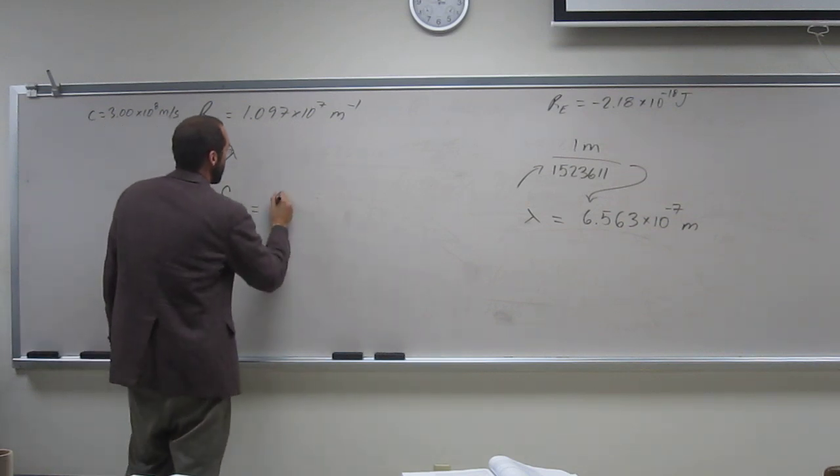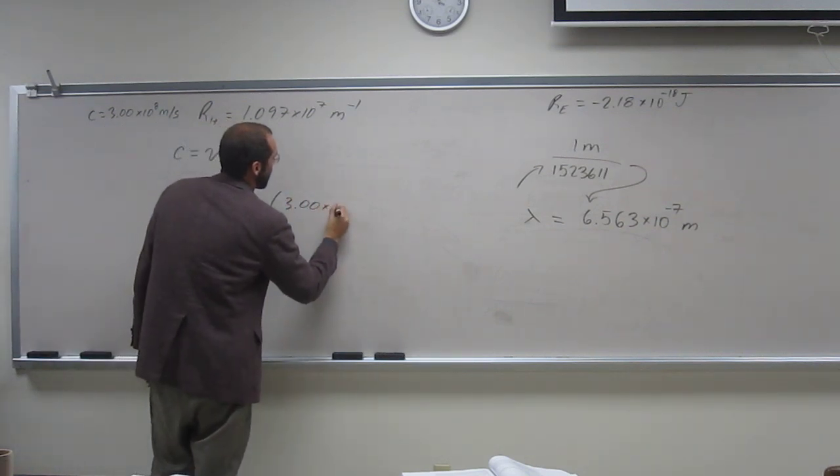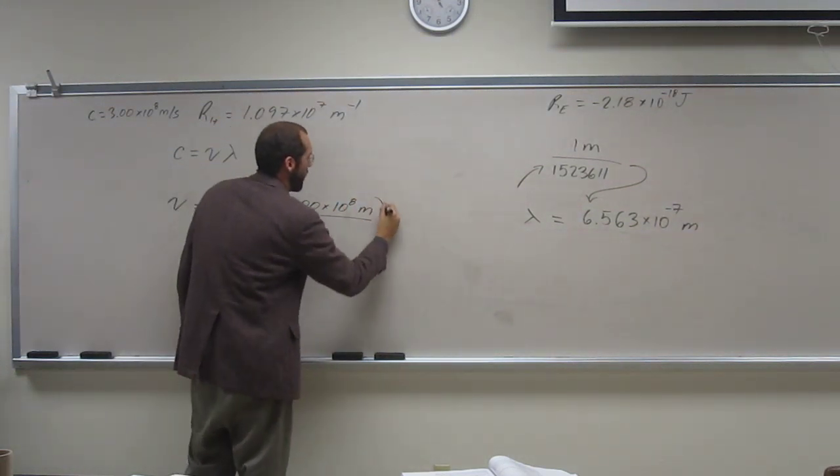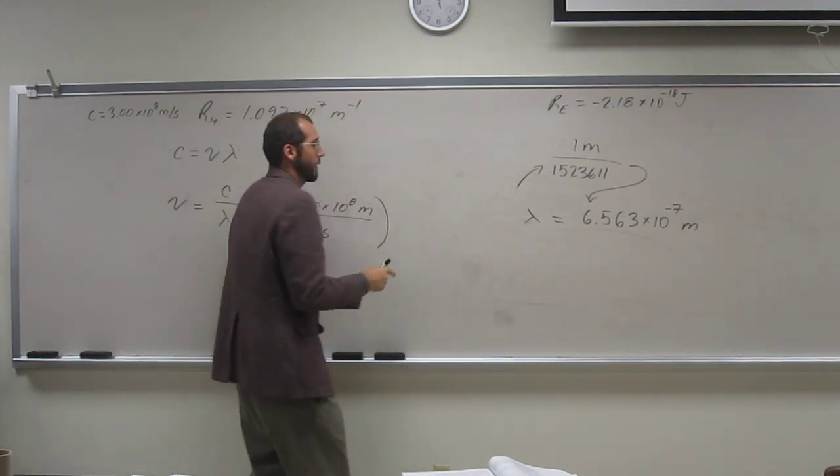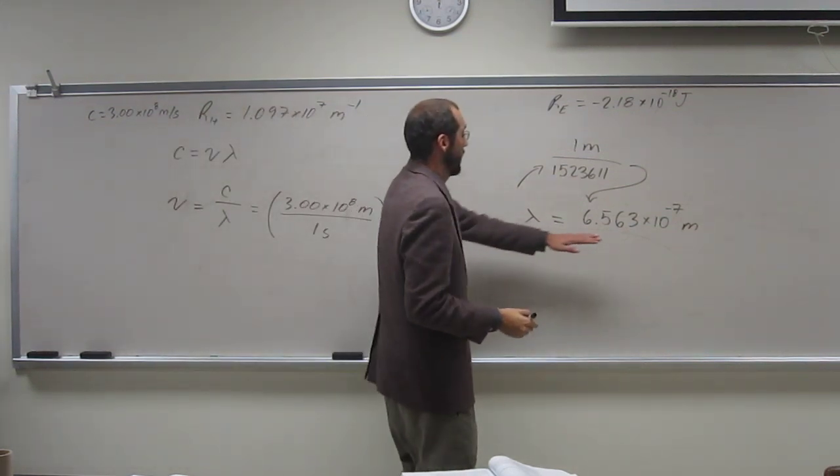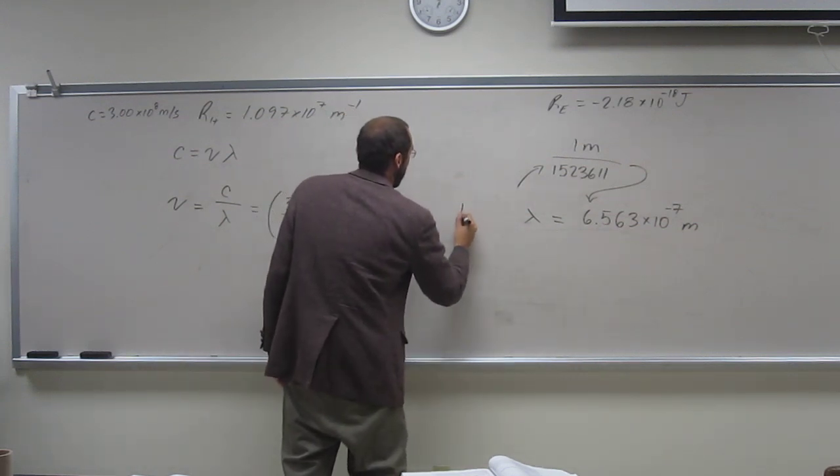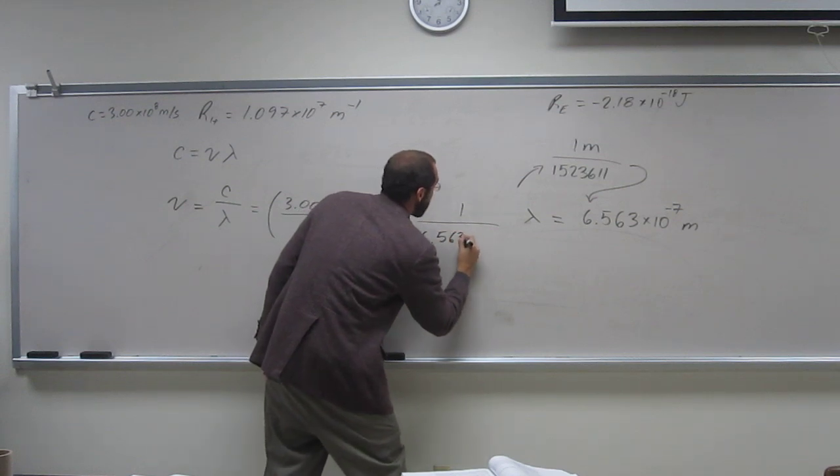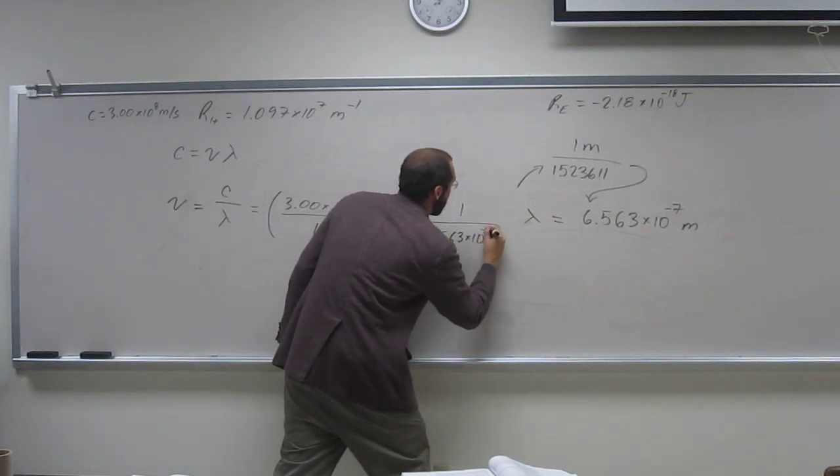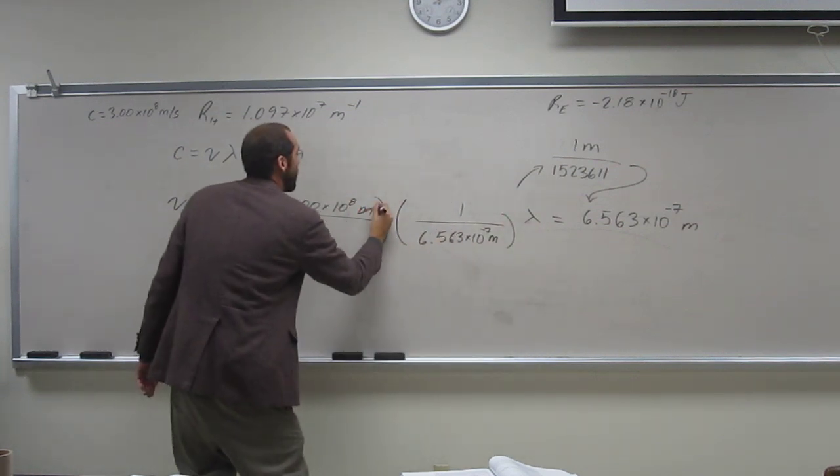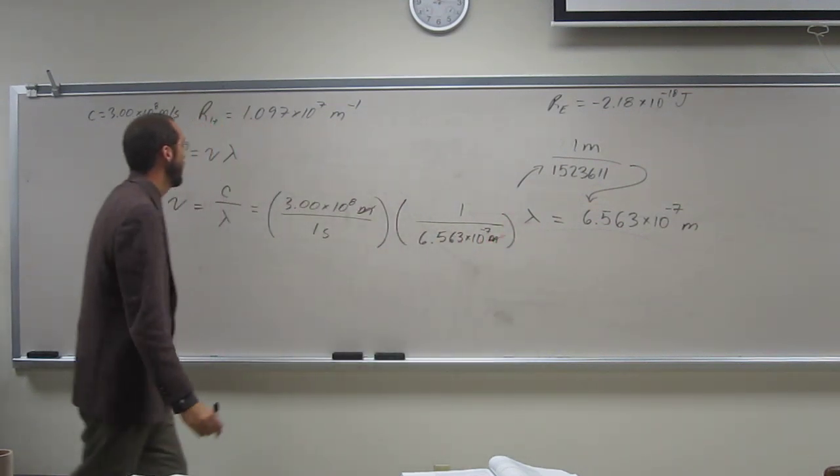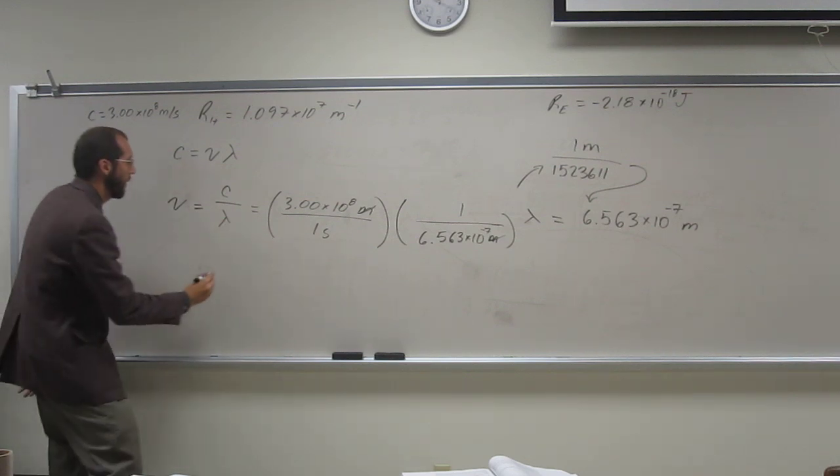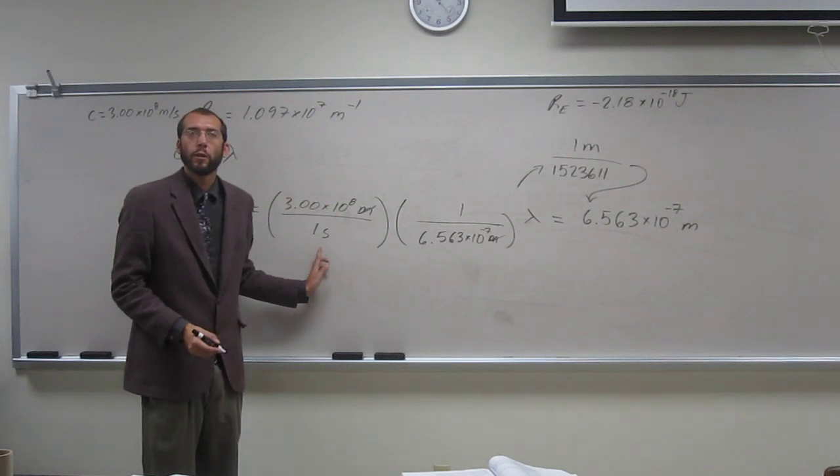So, we're looking for frequency now. So, frequency equals C divided by lambda, which equals 3.00 times 10 to the 8 meters per one second. And lambda is that, right? So, it's 1 divided by 6.563 times 10 to the negative 7 meters. Cancel, cancel, right? And frequency, of course, is in the value of hertz, right? In the units of hertz, which is also the units of per second, which is what we got.